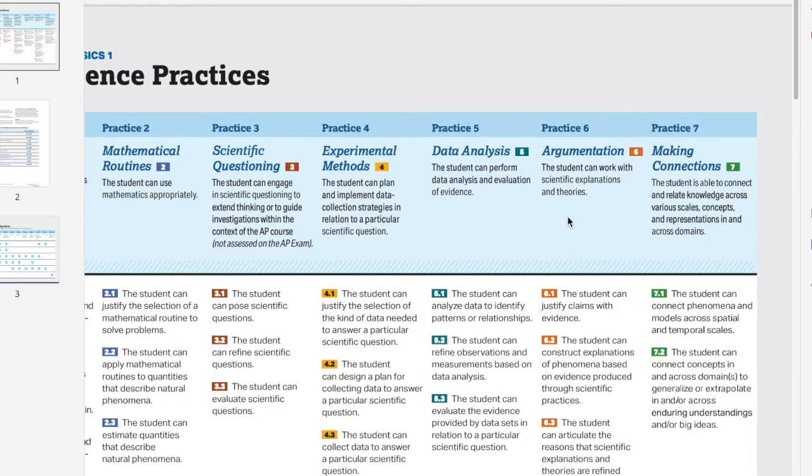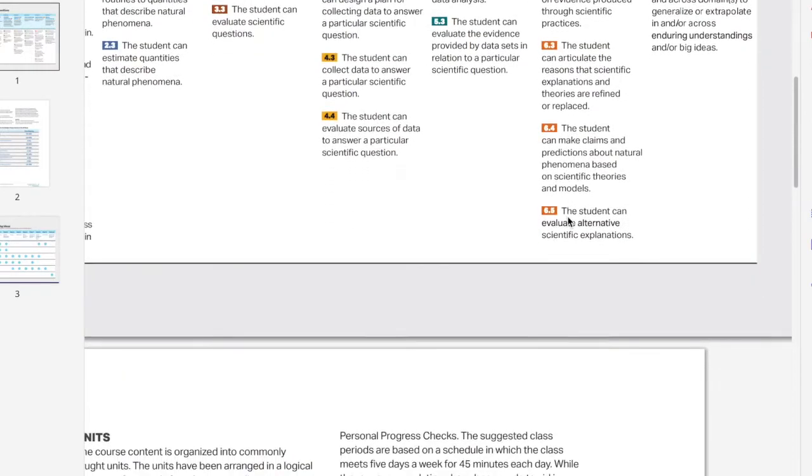We'll be able to relate things on a microscopic level with a macroscopic level. We can look at the orbits of planets, as well as the orbits of electrons. So these are scientific practices. So let's move on from here, and let's look at this page.